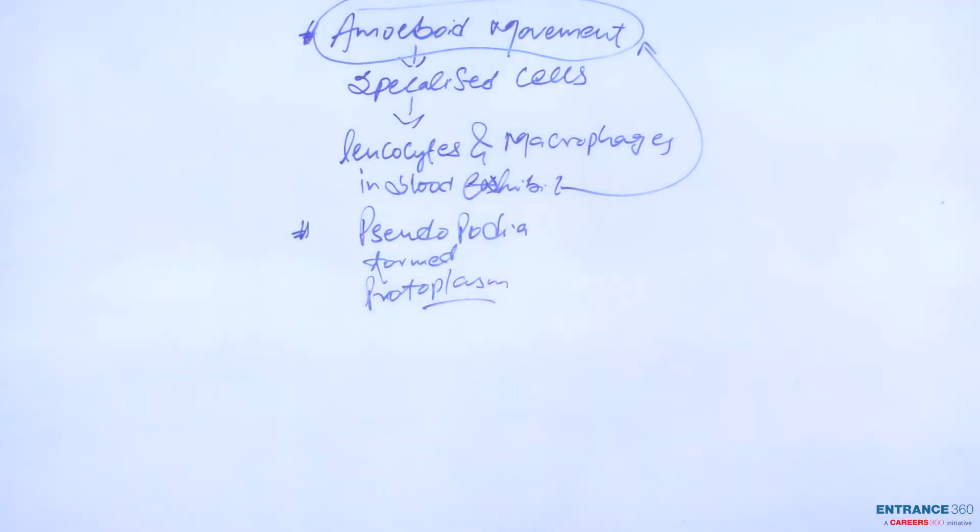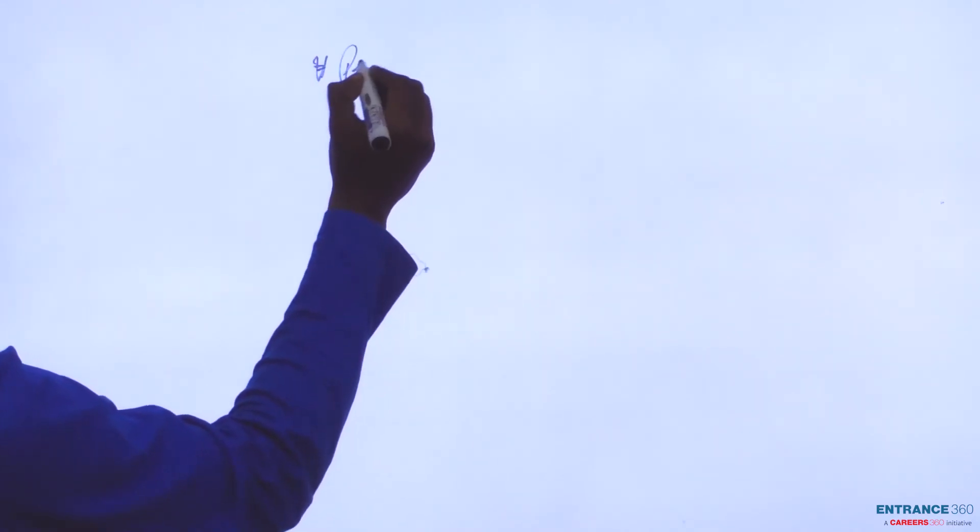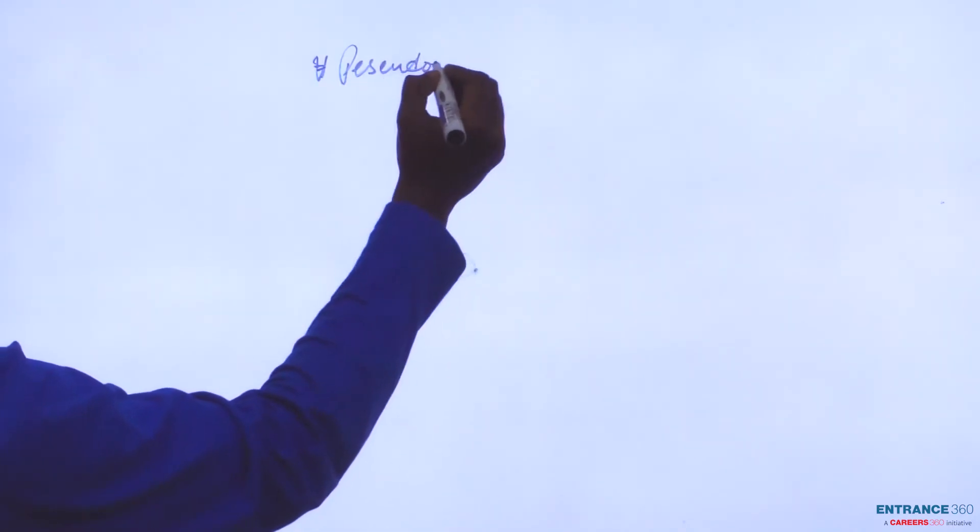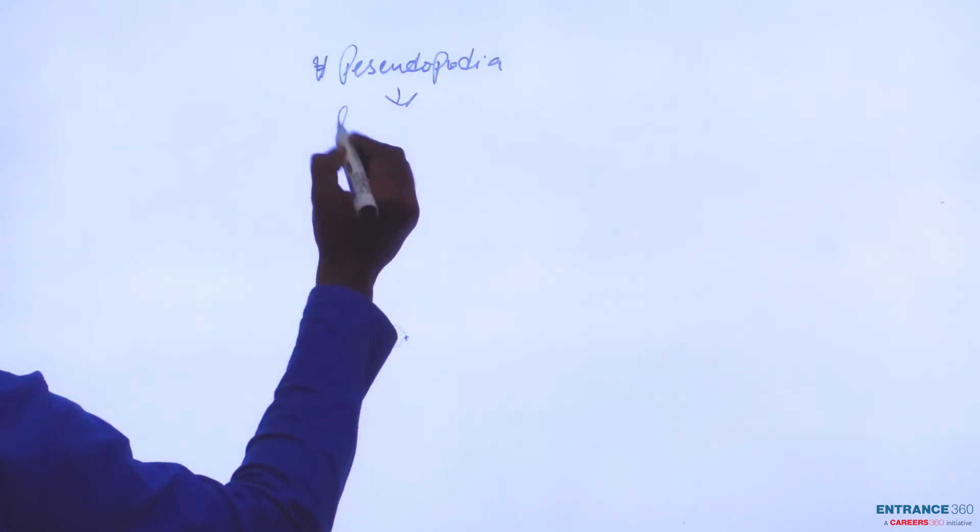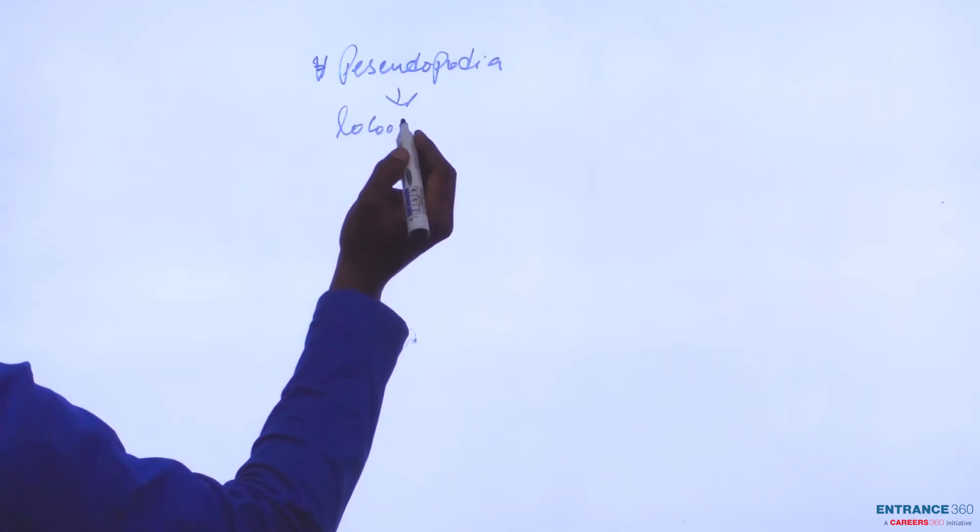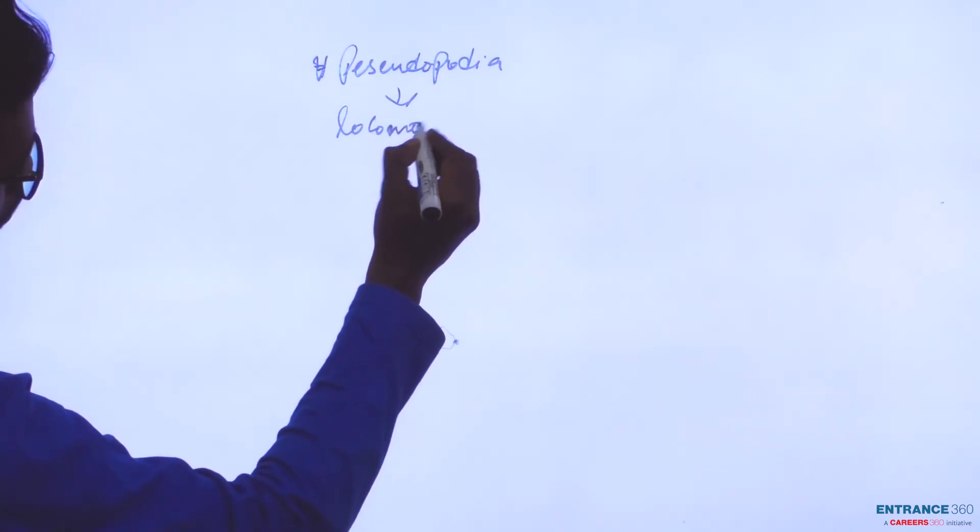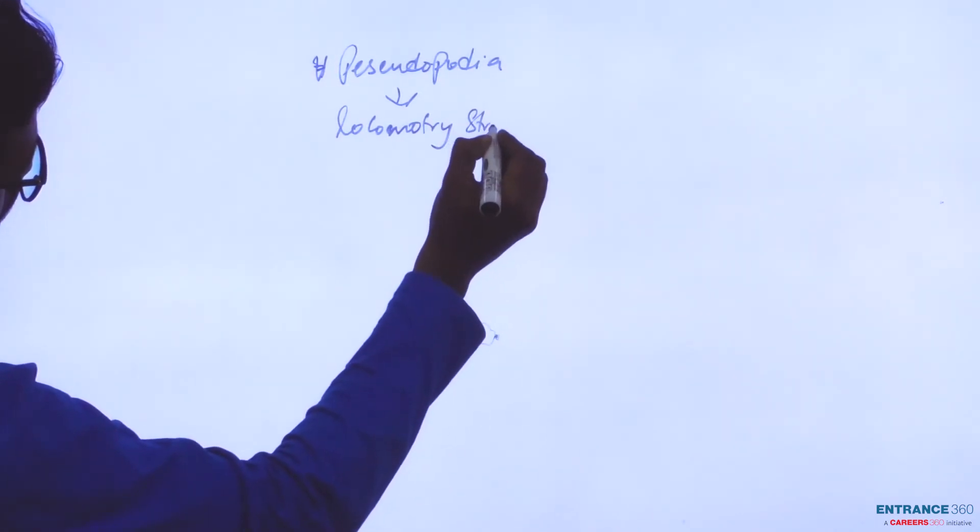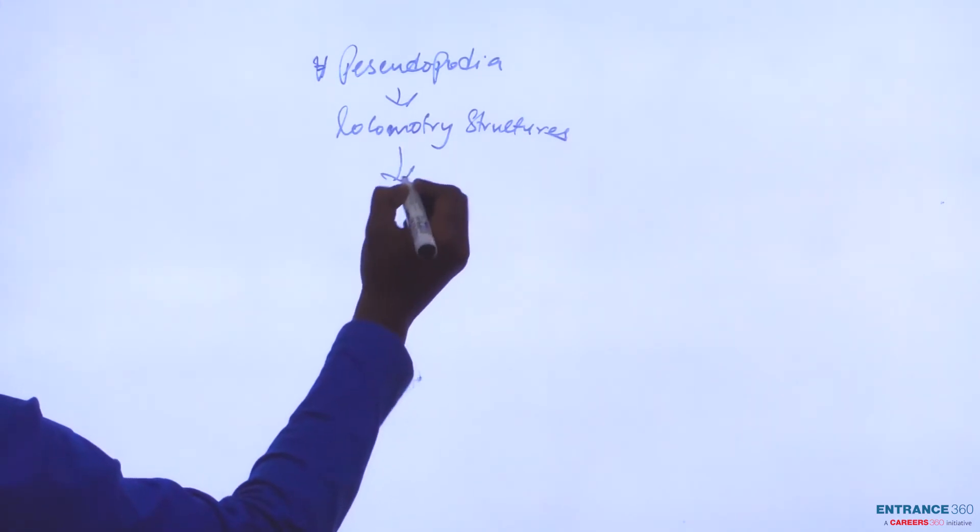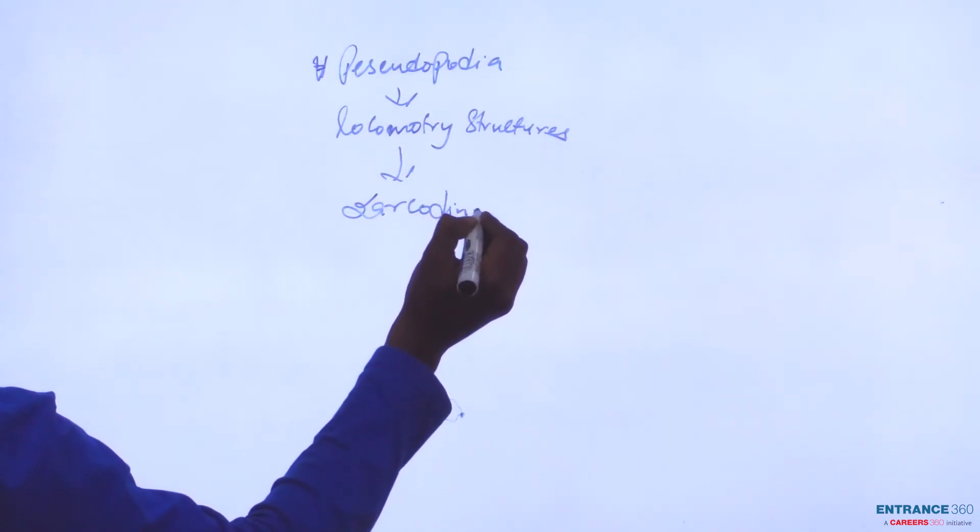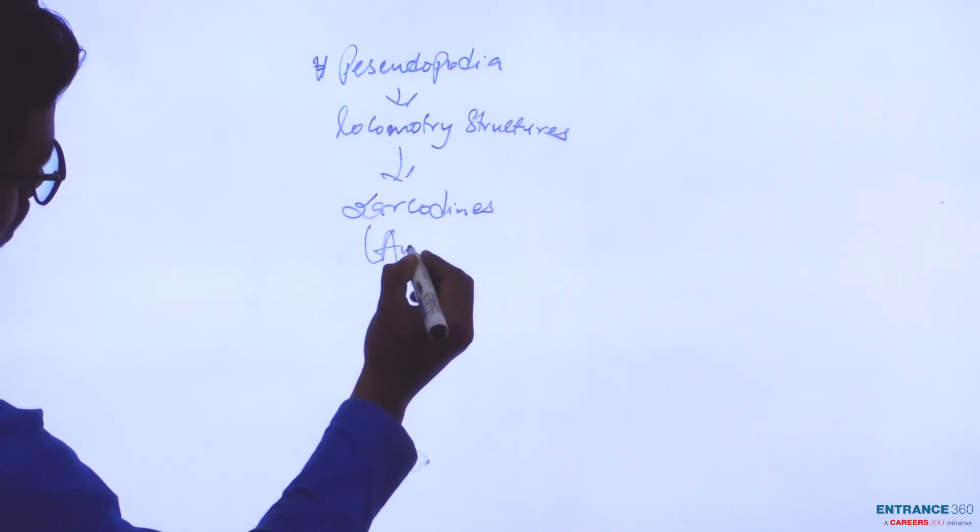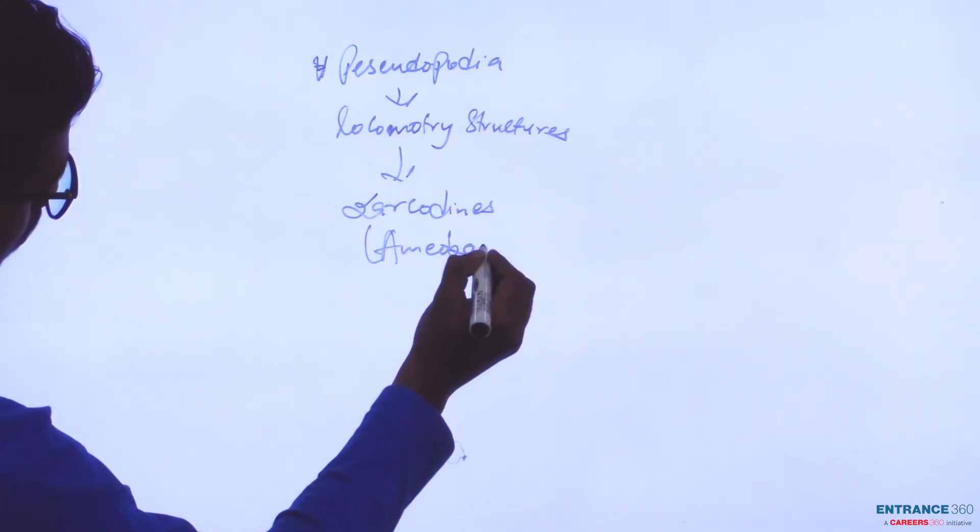Basically, pseudopodia are locomotory structures in sarcodines, which are amoeboid.